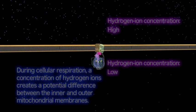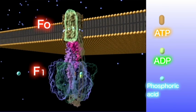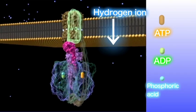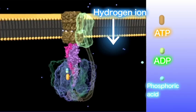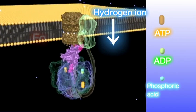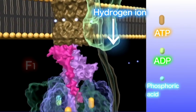During cellular respiration, the concentration of hydrogen ions creates a potential difference between the inner and outer mitochondrial membranes. ATP synthase has two rotating portions called F0 and F1. The F0 portion rotates using the force of hydrogen ions flowing from the higher concentration level to the lower. The rotation energy generates ATP in the F1 portion.